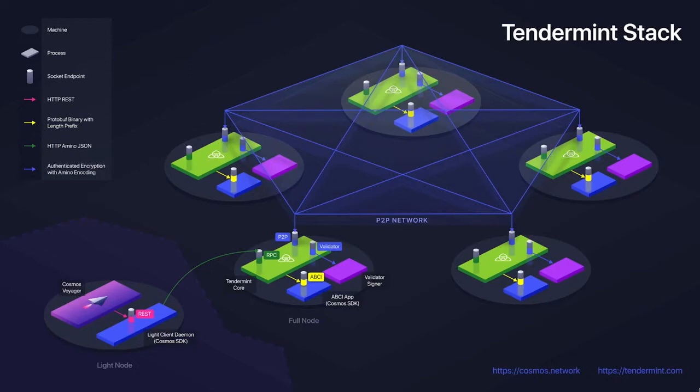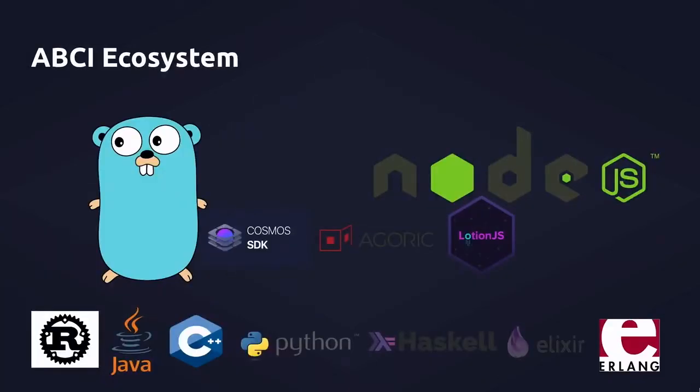Also, if you have any questions while I'm talking, just raise your hand or just yell them out. The ABCI ecosystem today is very wide. The ones that we support and maintain are the Rust and the Go ones. The other ones have been supported and built by the community. Some of the applications today, like Foam, are actually building out the Cosmos SDK implementation in Haskell, so they are the maintainers of the Haskell ABCI.